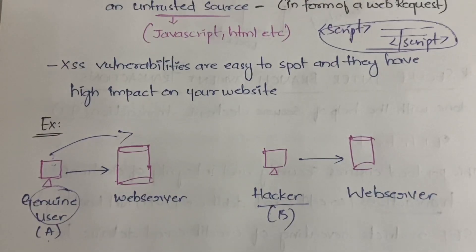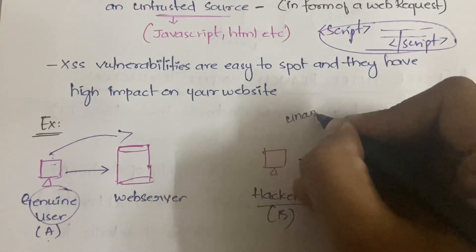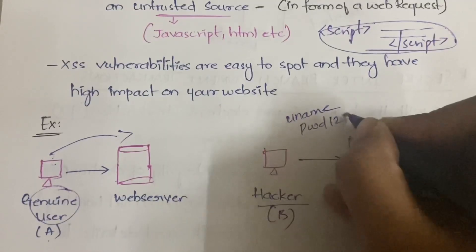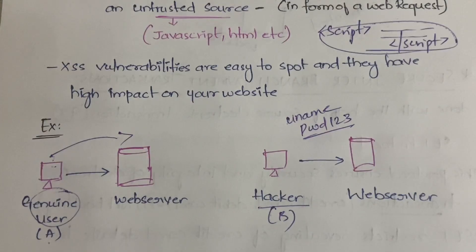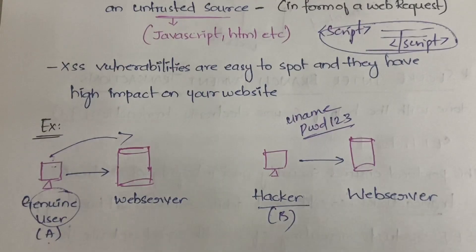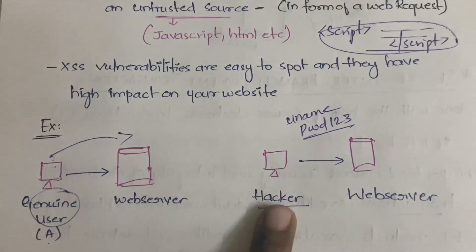Next, the hacker will also enter into the web server by providing a username and password. But instead of real credentials — say username 'username' and password 'pwt123' — he will input some scripting code in place of the username or password field. Because of that, the scripting code enters the web server, gets executed, and changes are made or additional data or hyperlinks are added.